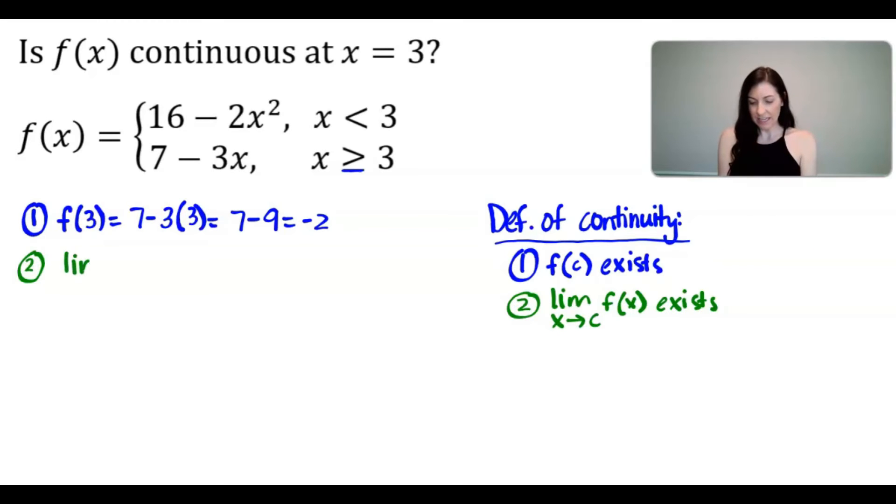So first let's find the limit as x approaches 3 from the left-hand side of f of x. In this case we want to use the top function because that's when x is less than 3. We would get 16 minus 2 times 3 squared, which is 16 minus 18 or negative 2.